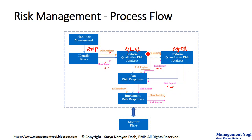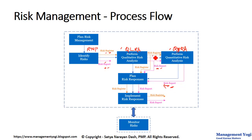QLRA is mandatory whereas QTRA is optional. If you are bypassing QTRA, you will go directly from QLRA to Plan Risk Responses. In that case, the risk register and risk report coming from QLRA will directly act as inputs to Plan Risk Responses. Assuming we are fully following all the processes, you will get only the risk report from QTRA, and the risk register from QLRA containing the prioritized individual risks will also act as an input.